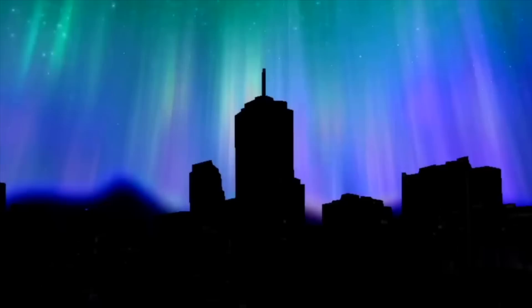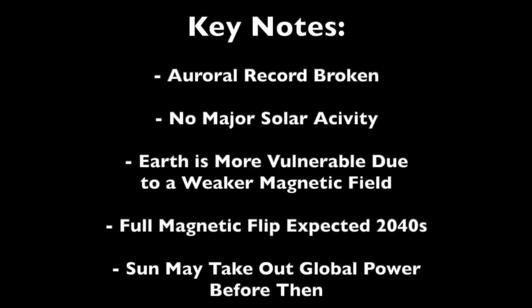We absolutely shattered the auroral record last year — not a good sign. It happened on the heels of minor to moderate space weather only, and that's worse. The magnetic field weakening is leaving us more and more vulnerable, and that is only expected to continue and get worse. Everything from watching the sun to monitoring Earth impacts with tools like the geoelectric hazard maps is critical from this point forward.